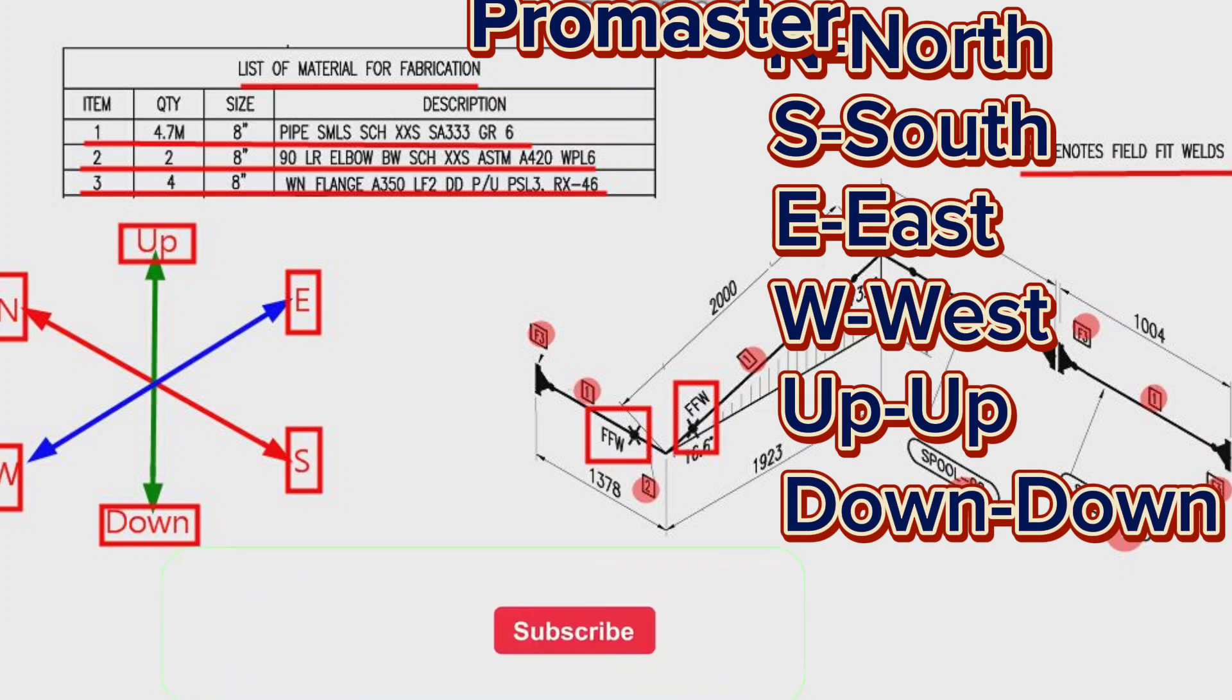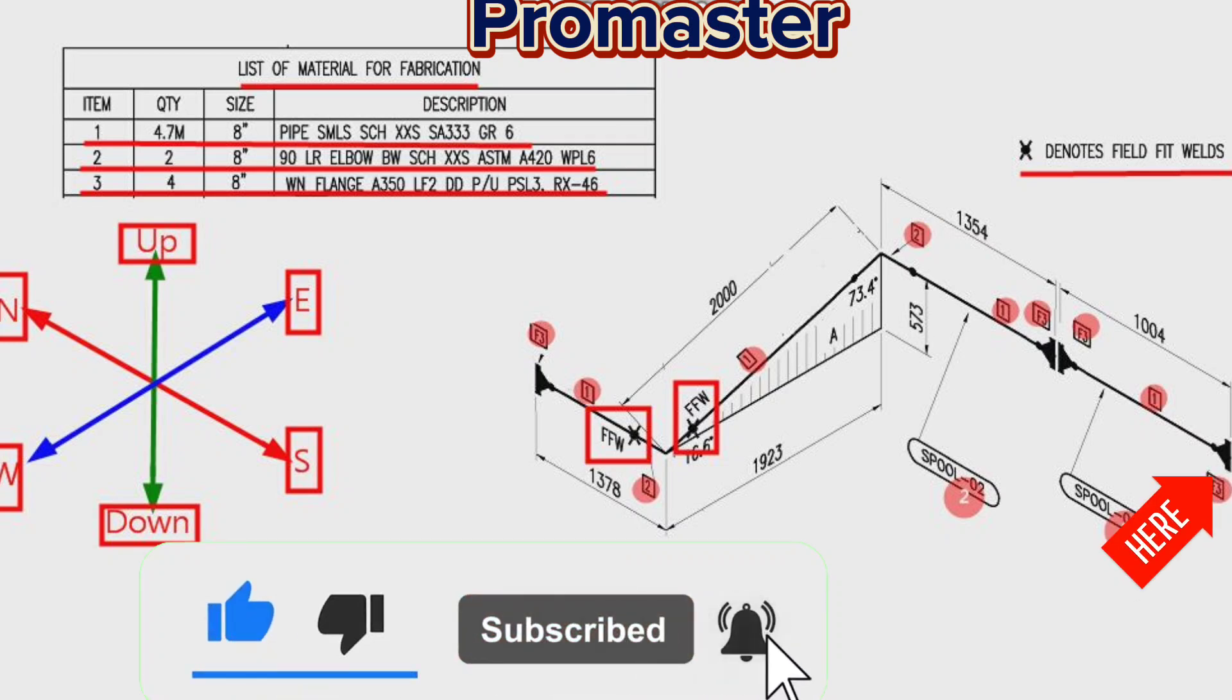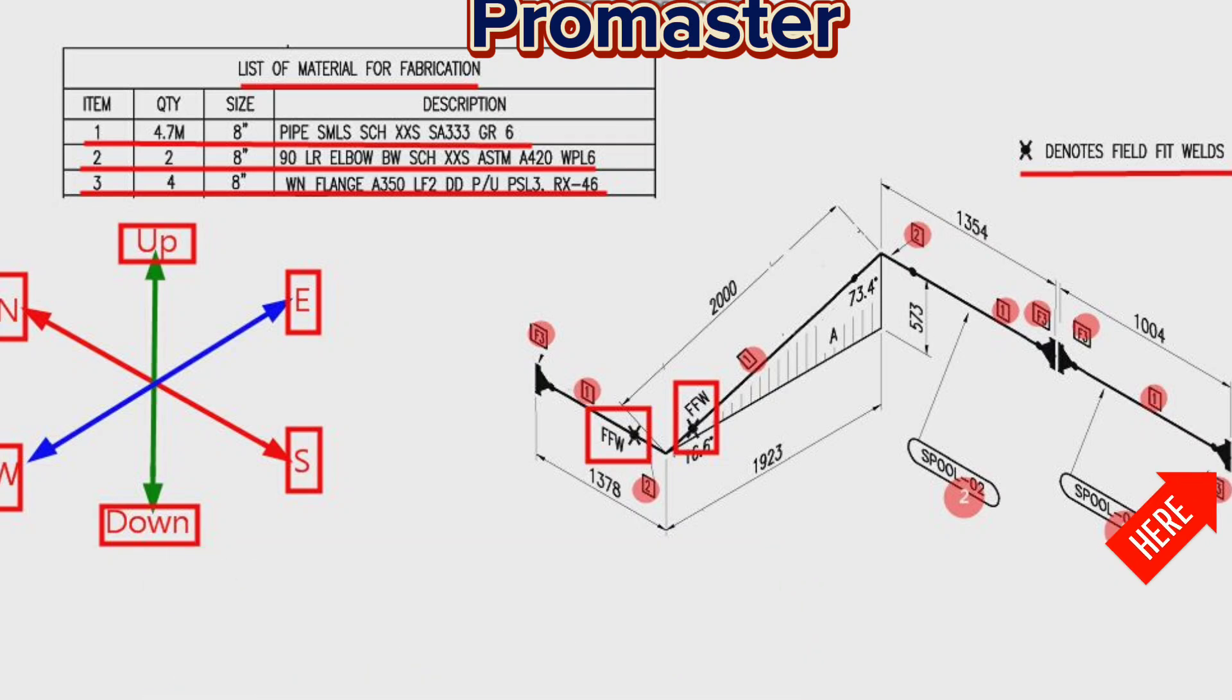Let's try to read this pipe isometric using these directions. We will start reading the piping isometric from this point. The pipeline travels from this point to the north direction.